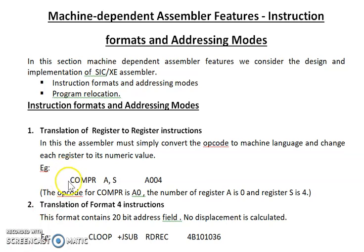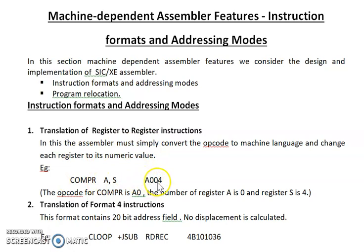Let's look at an example. Here we have an instruction COMPR A and S, where A is the accumulator and S is another register. The equivalent opcode for this instruction is A0. The numerical value for accumulator A is 0 and for S is 4. So the conversion of this instruction will be A0 04 — A0 is the opcode, A is replaced with 0, and S is replaced with 4. This is how register-to-register instructions are translated by the assembler.